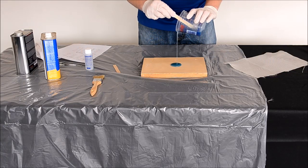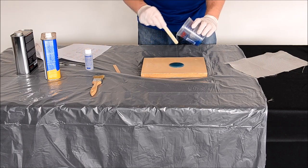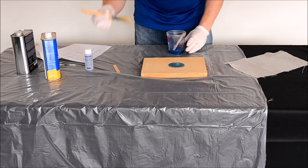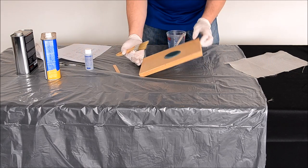Using a throw away brush or spreader, spread the resin until it covers the desired surface and there is a nice thin layer of resin on the plywood.